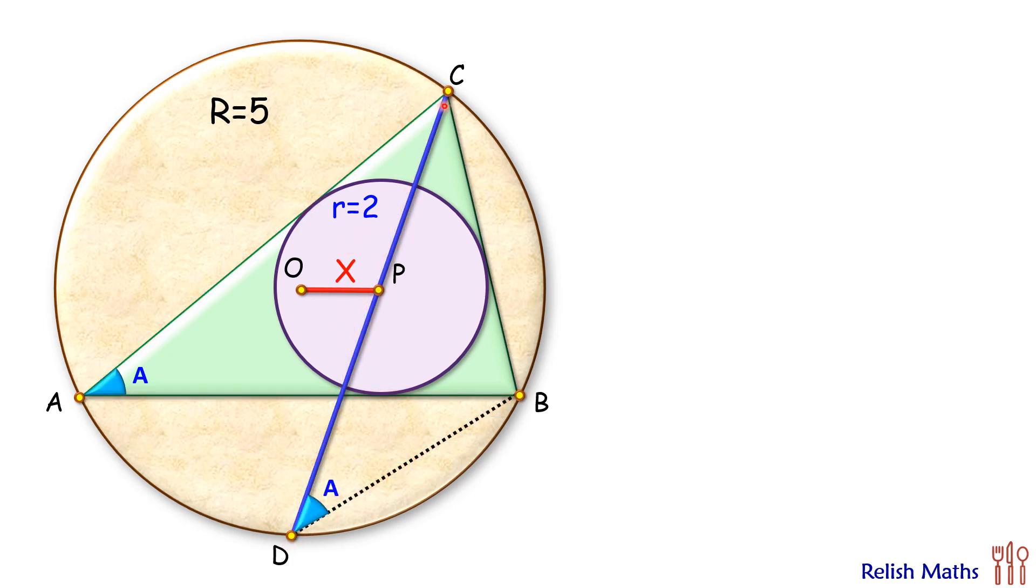Also we know that from a point if you are drawing two tangents, then the line joining that external point and the center, that is this line CP, it will bisect the angle contained between these tangents. And thus if this full angle is C, then this part of angle will be C by 2.